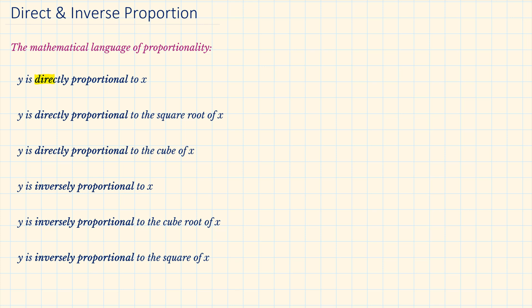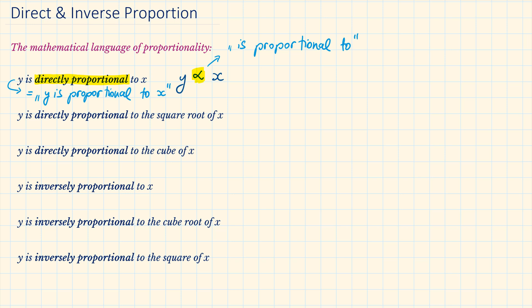When we say Y is directly proportional to X, in mathematics we just use three symbols for it: the letter Y, the symbol for proportionality (the one highlighted in yellow), and the letter X. Whether we say Y is directly proportional to X or Y is proportional to X, it means the same thing. To write this as an equation, we replace the symbol of proportionality with the equal sign and a K, so we have Y equals K times X. The K is the constant of proportionality — constant means that in a formula this number is fixed.